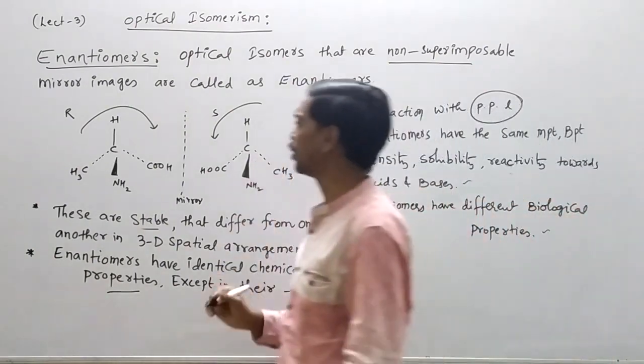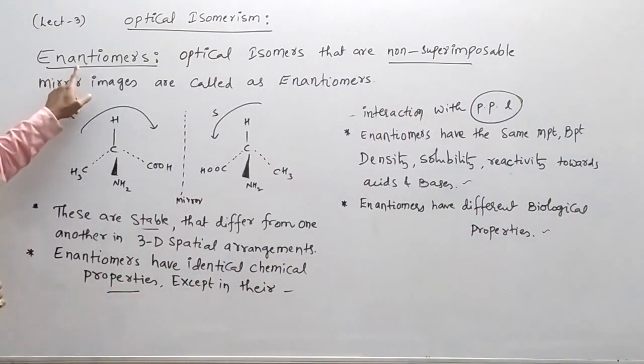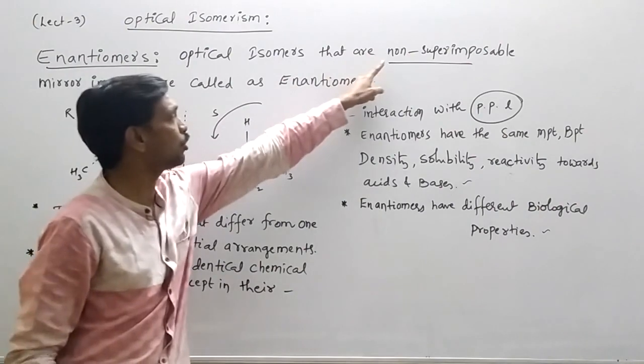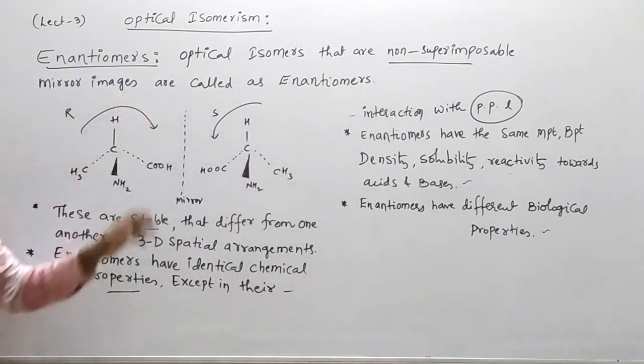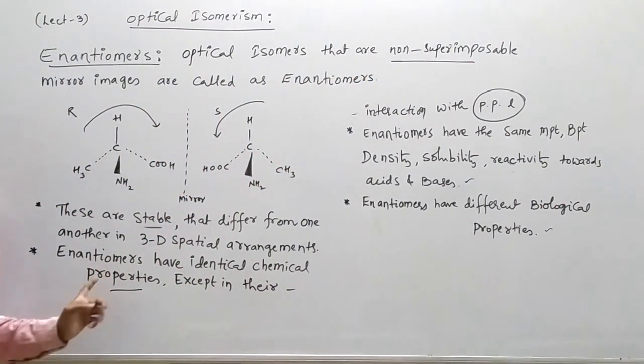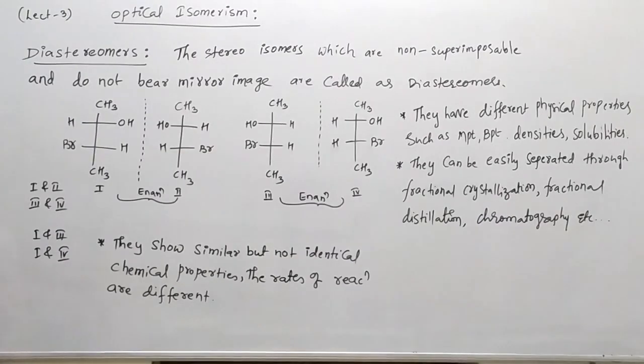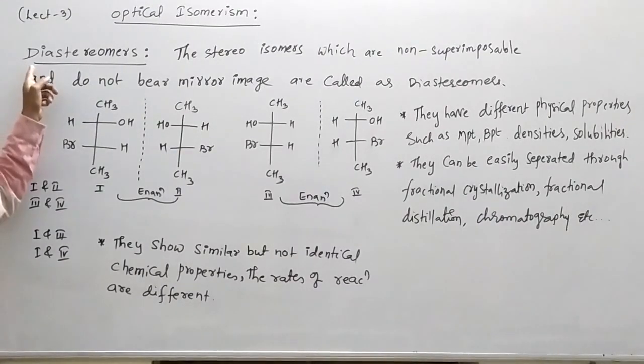This is about enantiomers. So enantiomers are important to know what is non-superimposable mirror images.